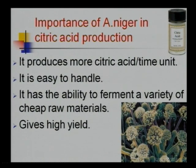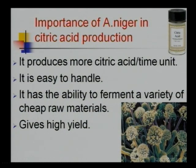Aspergillus niger has always remained the organism of choice for citric acid production on a commercial basis because it has many advantages. Aspergillus produces more citric acid per time unit, it is easy to handle, it has the ability to ferment a variety of cheap raw materials, and it gives high yield. Industrial strains of Aspergillus are not freely available. Improved strains are obtained by two different processes: mutagenesis and selection. Selection is done in different ways — one of the best methods is the single spore technique and the other is the passage method.